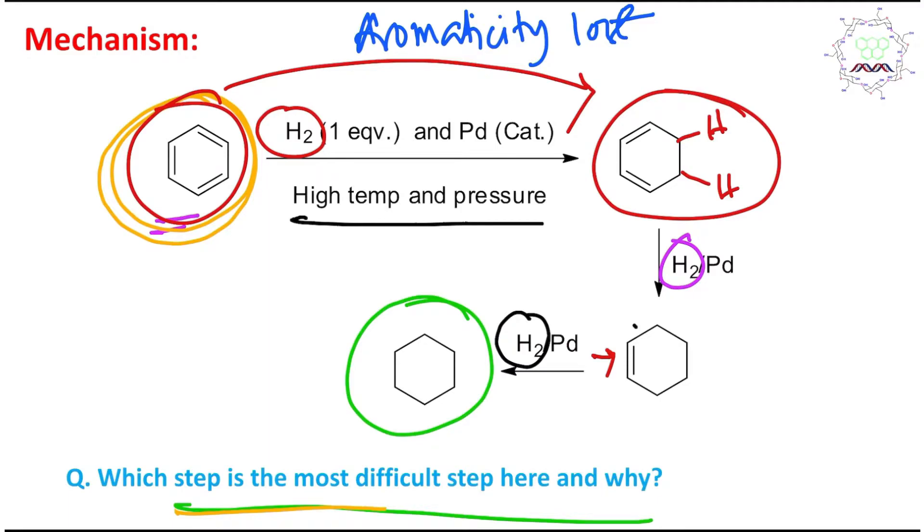Now if I ask you who is more reactive between benzene and this 1,3-butadiene? Obviously the product is more reactive. If the product is more reactive, then what do you expect? When this product is produced, it will be converted into the next product. This is also very reactive compared to benzene, so it will again undergo hydrogenation and finally be converted into cyclohexane.